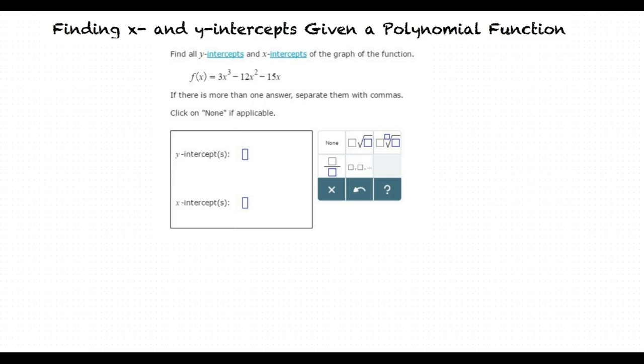So now we find the x-intercepts, right? Yes. In order to do this, we are going to need to factor the polynomial.